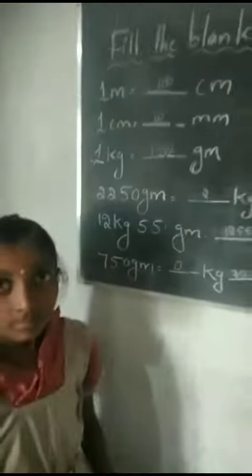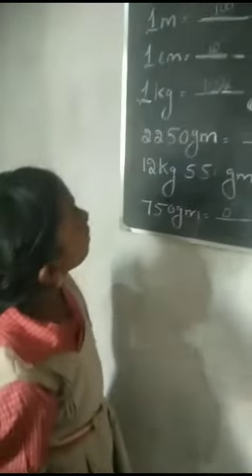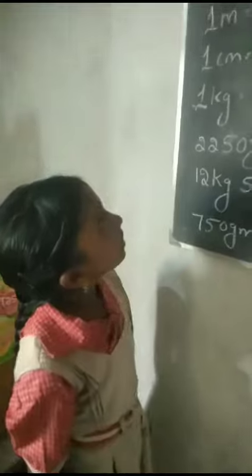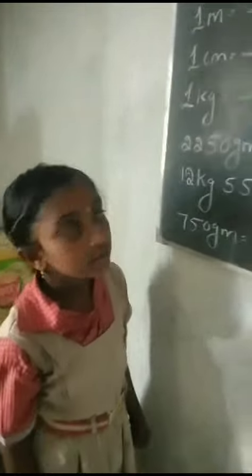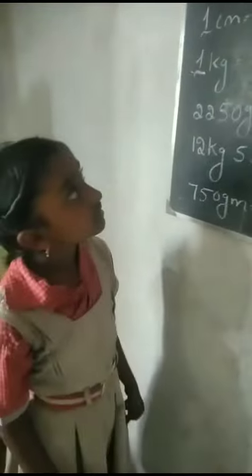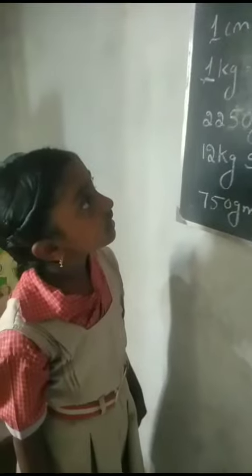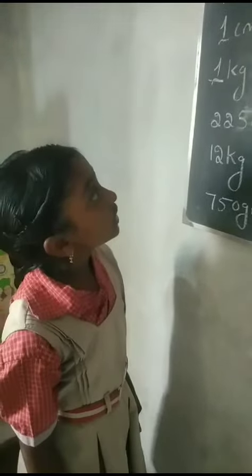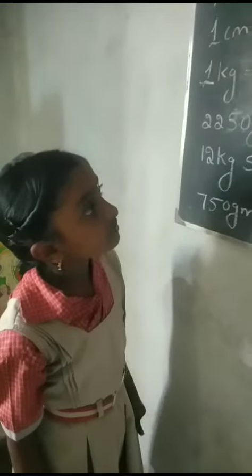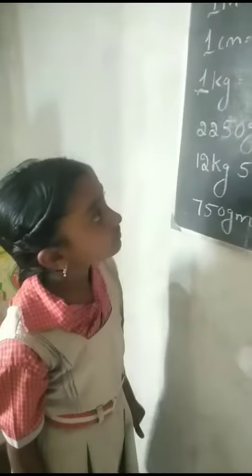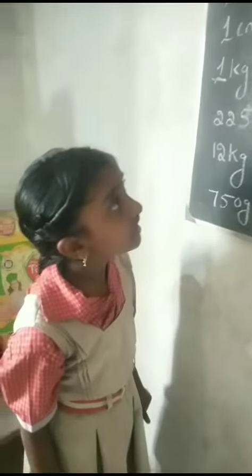What is meant by M? Here, 1 M is equal to how many? What is meant by M? What is meant by CM? What is meant by kg? What is meant by GM? Very good.